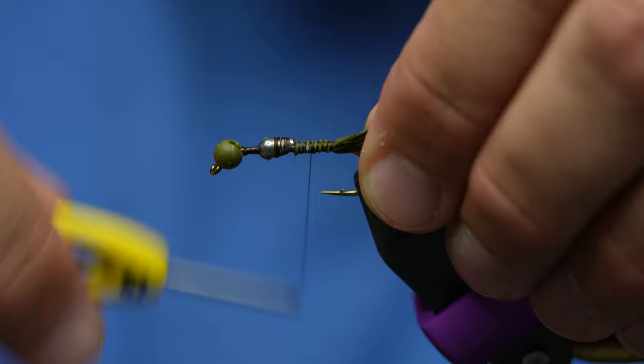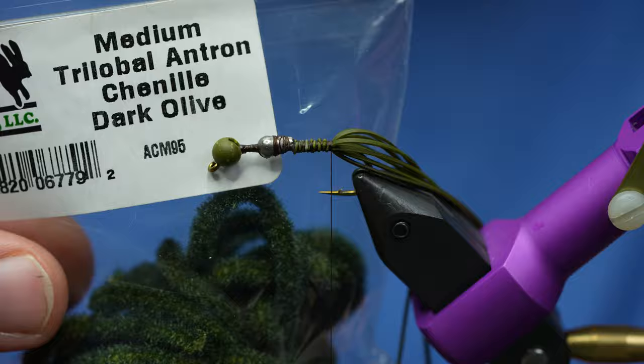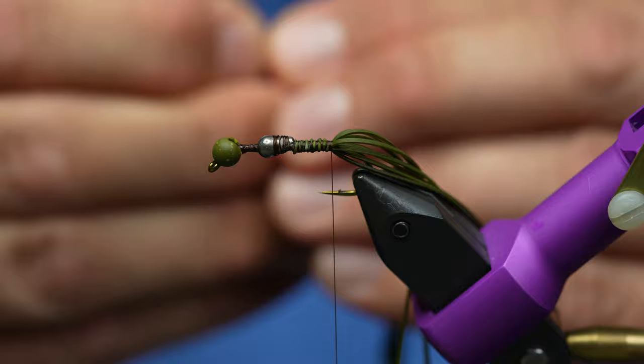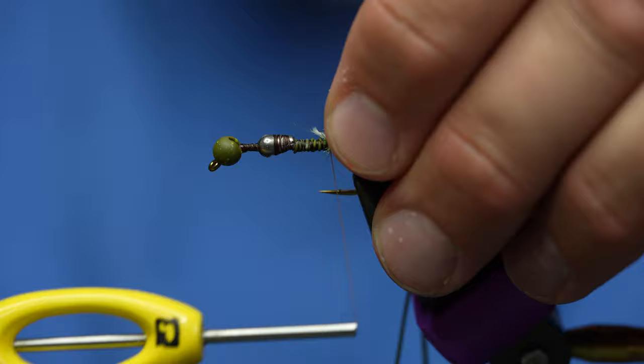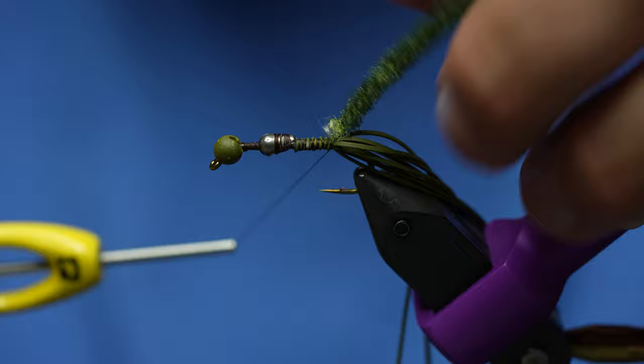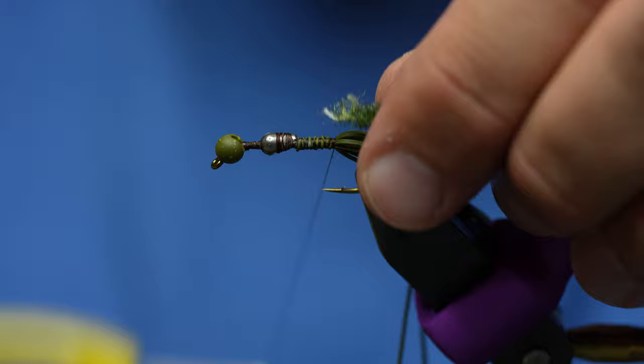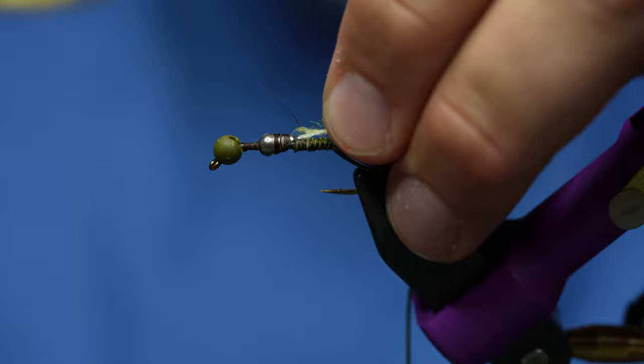The next step is this trilobal antron chenille. It's really cool stuff - it's sparkly, and when it gets wet it goes kind of translucent, just a really buggy material. I'm going to tie this in maybe with a little bit of core still showing so I can do that first wrap a little bit further back. Actually I gotta redo that - I only got one strand in there. That's much better.